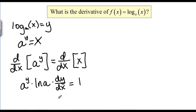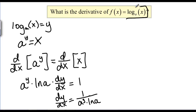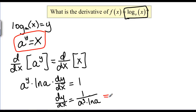Now we solve for DY/DX: DY/DX is equal to 1 over A to the Y times ln(A). The last step is to go back to X, since our equation was given in X. A to the Y we know is the same thing as X, so we rewrite this as 1 over X times ln(A). Those are 3 new derivative rules we can use when taking derivatives that involve natural log, log base A, or A to the X.